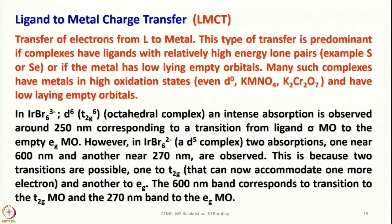What is ligand-to-metal charge transfer transition? As the name says, transfer of electrons occurs from ligand to metal. This type of transition is predominant if complexes have ligands with relatively high energy lone pairs — for example, sulphur or selenium — or if the metal has low-lying empty orbitals. Many such complexes have metals in the highest oxidation state.